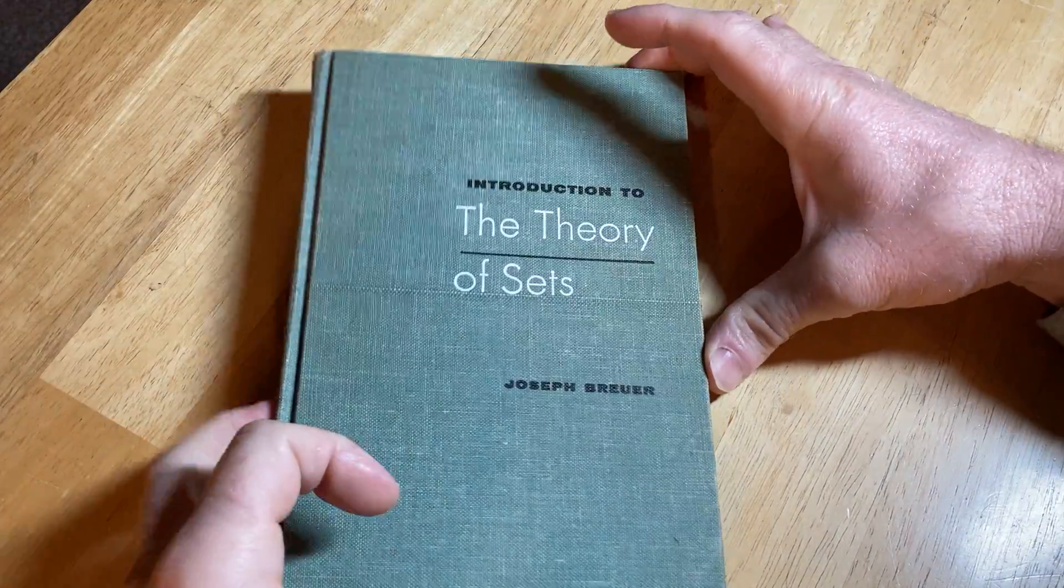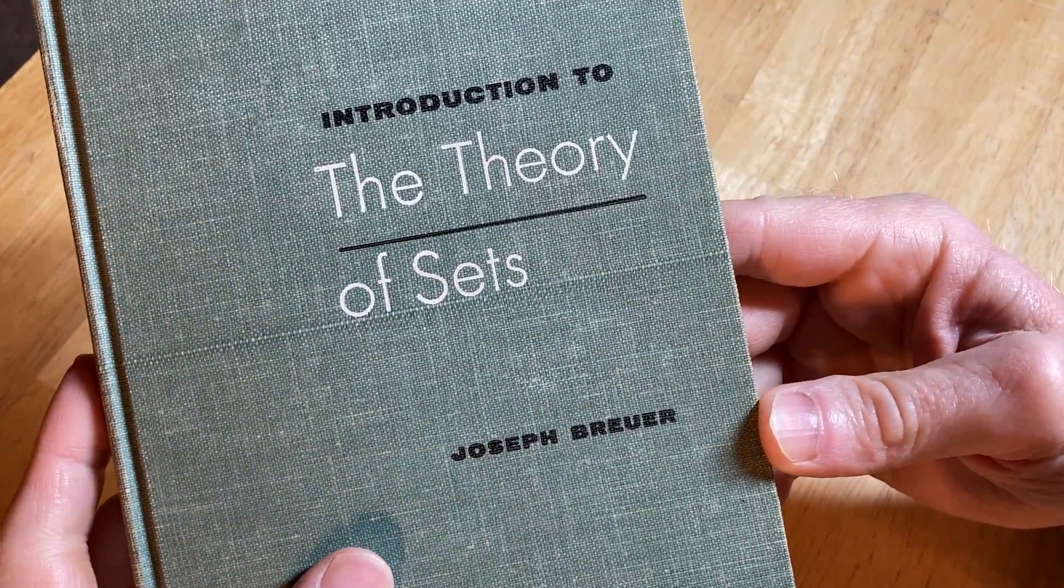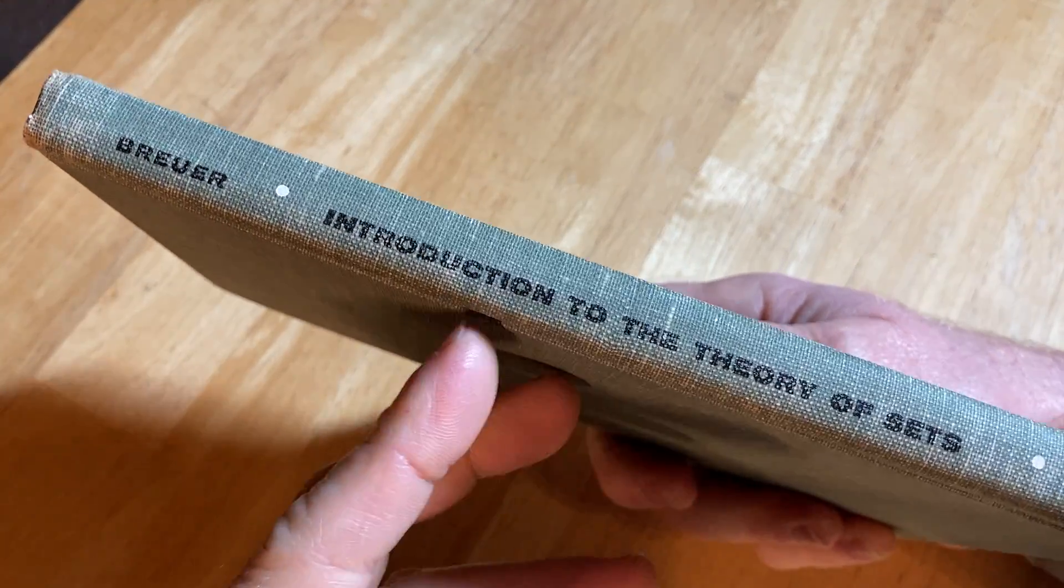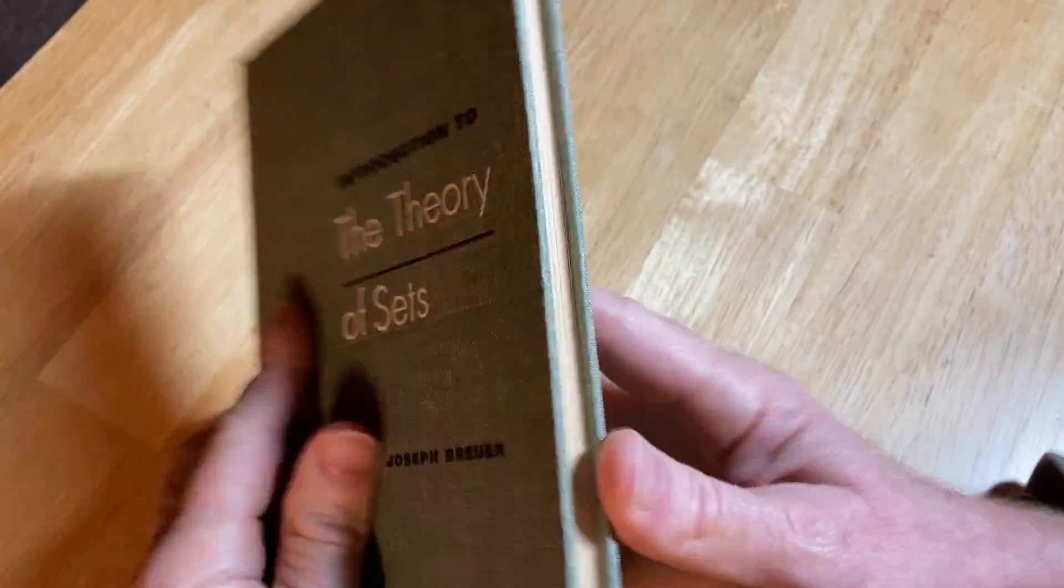Hi, here's an old book. It's called Introduction to the Theory of Sets. It's by Joseph Brewer. And this book was actually a gift. Someone gave me this book, and I am very grateful for that.